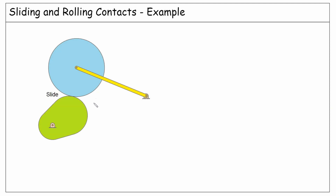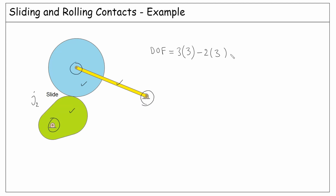Let's have some examples. We want to determine the degrees of freedom for systems that might include contact constraints of type sliding or rolling. In this first system, we notice that there is a sliding contact here, which we must consider as a J2 constraint. So the degrees of freedom is 3 times 3 bodies, minus 2 times J1 — we have 3 revolute joints — minus J2, we have 1 sliding contact here. And the degrees of freedom is 2.